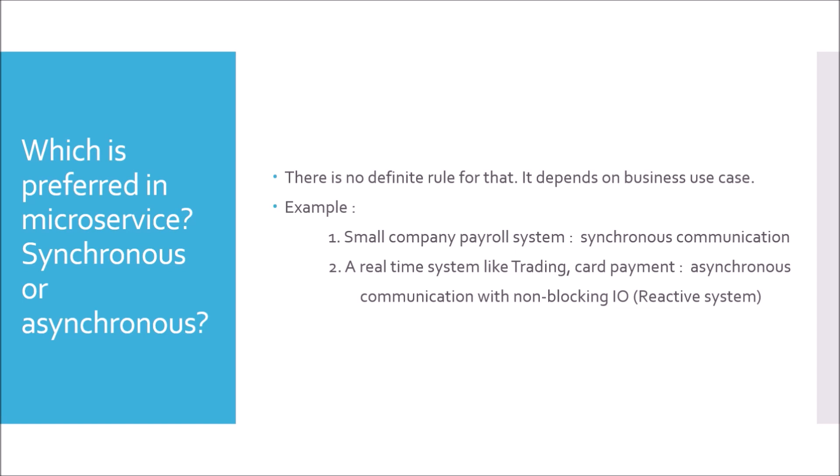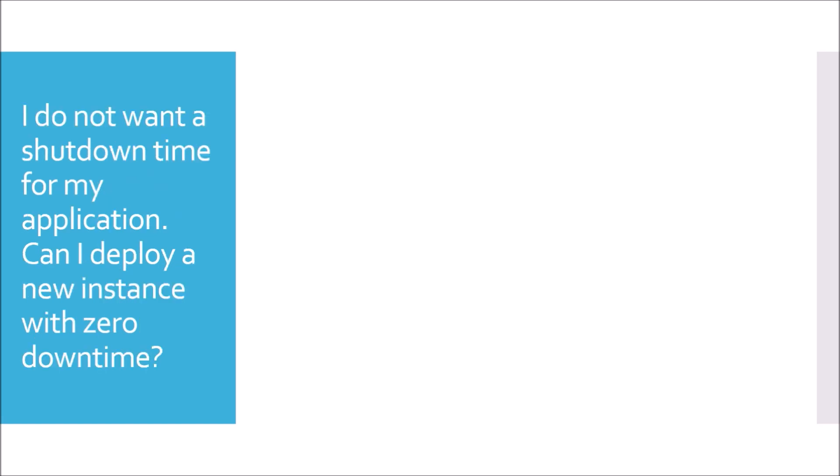I do not want a shutdown time for my application. Can I deploy a new instance with zero downtime? If you are working in IT, you may have noticed that mails sometimes come for a production shutdown for maintenance activity. But Gmail, WhatsApp, and Facebook never give you notifications about shutdown or maintenance time — they use a zero downtime version upgrade of their applications.